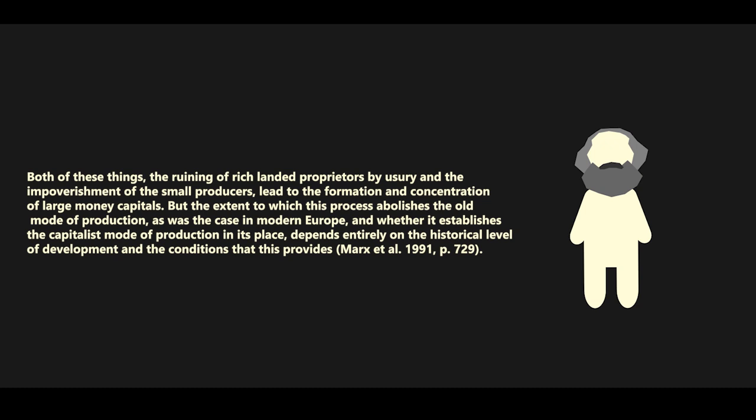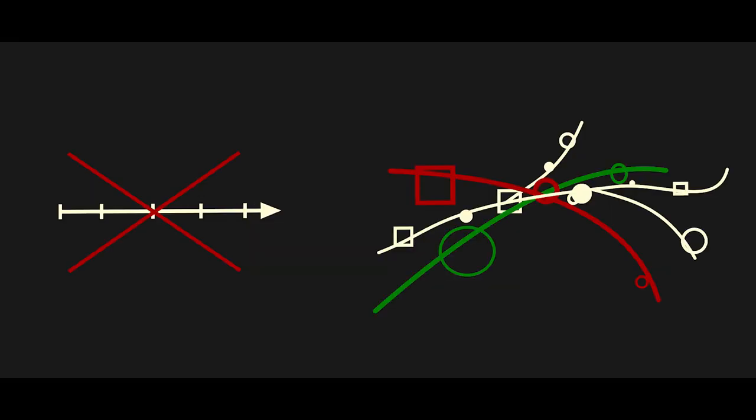Both of these things—the ruining of rich landed proprietors by usury and the impoverishment of the small producers—led to the formation and concentration of large money capitals. But the extent to which this process abolishes the old mode of production, as was the case in modern Europe, and whether it establishes the capitalist mode of production in its place depends entirely on the historical level of development and the conditions that this provides. There are a couple crucial elements here. Marx seems to imply that the development of the capitalist mode of production, and indeed any new mode of production, is not a predetermined outcome. The abolition of the old mode of production and the establishment of a new mode of production is not a given, but rather depends on several historical factors. Thus, the formation of a new mode of production cannot rely on a single socioeconomic dynamic, though each component of the economy and society can play a key role in the establishment of the conditions necessary for the transition.